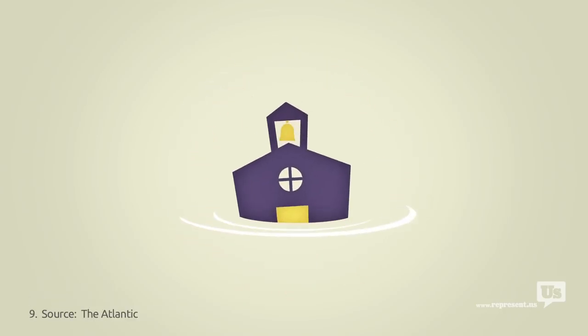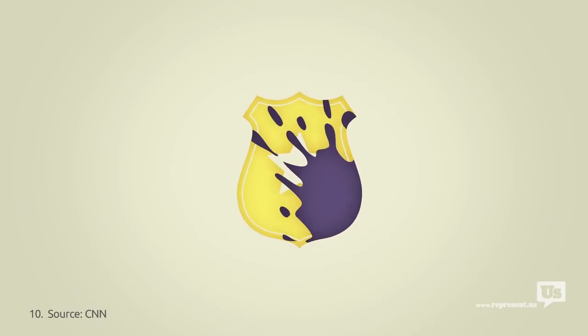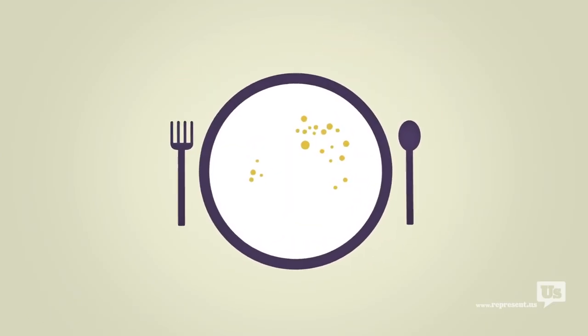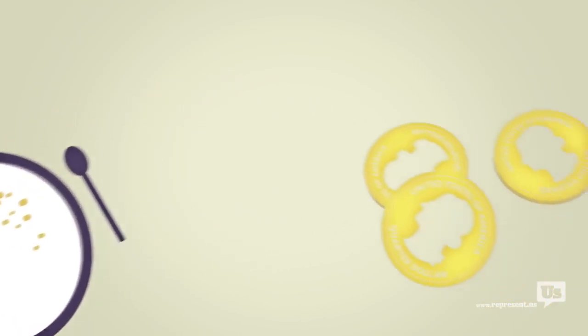With wasteful spending, a floundering education system, a catastrophic drug war, and one in five American children born into poverty. Almost every major issue we face as a nation can be traced back to this graph.